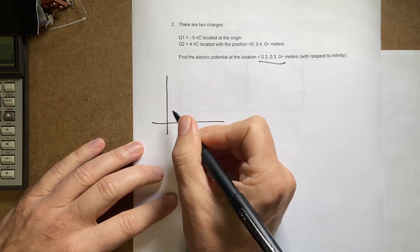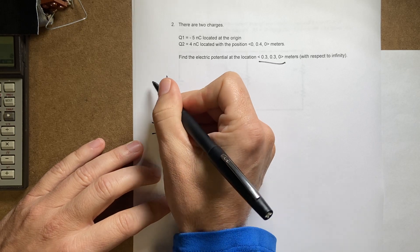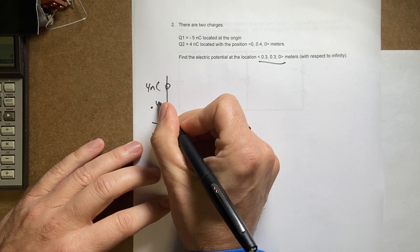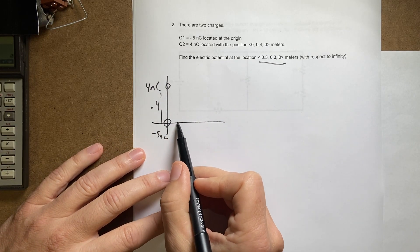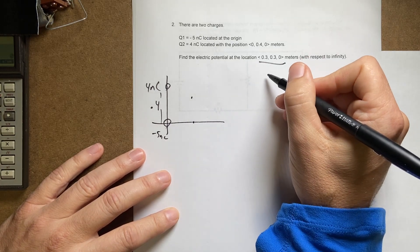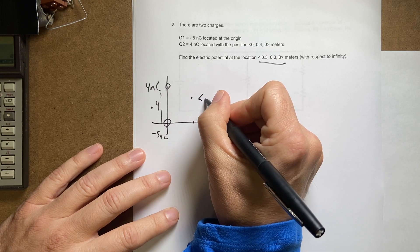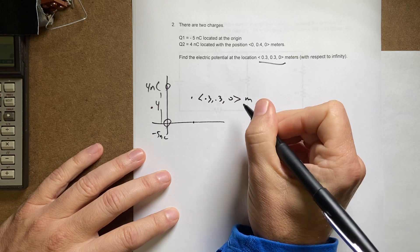Here I have a negative five nanocoulombs and then here I have a four nanocoulombs charge. This is 0.4 meters on the y-axis. I want to find the potential at point (0.3, 0.3) right there. This is (0.3, 0.3, 0) meters at that point.